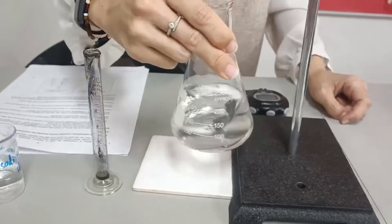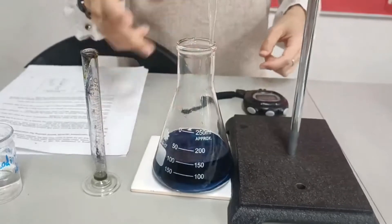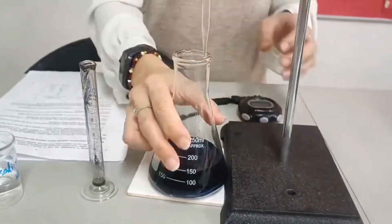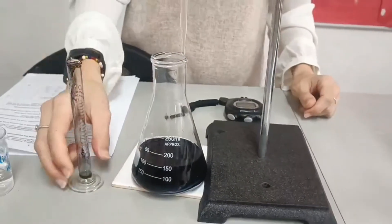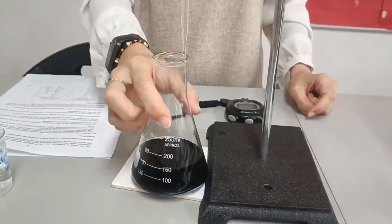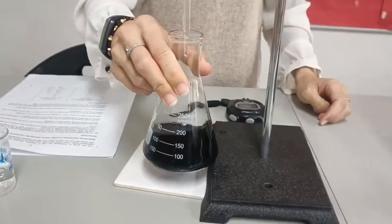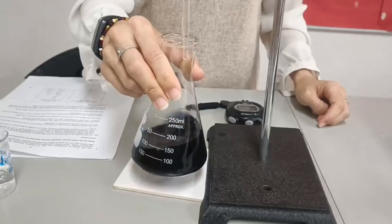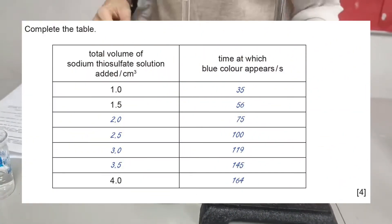So, as I said before, as you add the thiosulfate, you have to keep on swirling. You cannot put it down and add and then swirl because it will be too late for you and you cannot see the color change. You keep on swirling while adding the thiosulfate 0.5 ml at each time. Good luck.